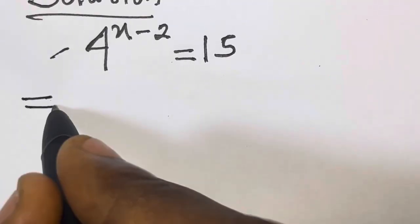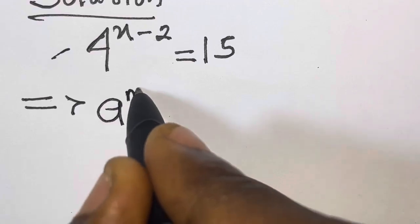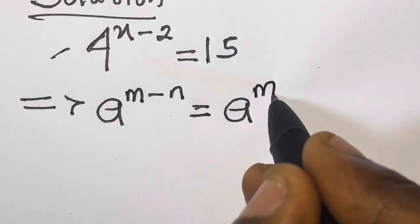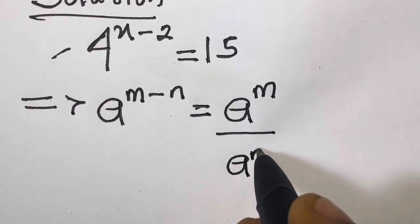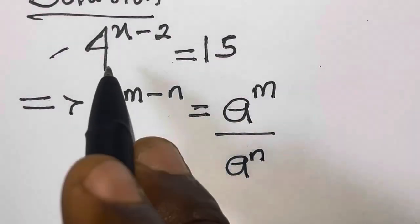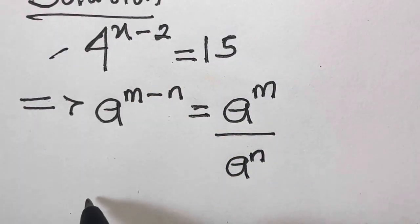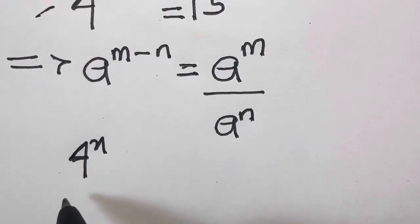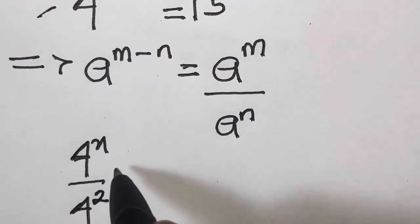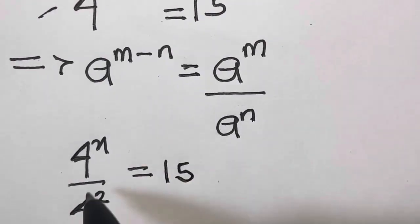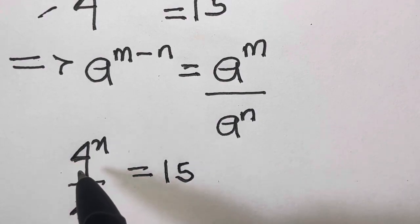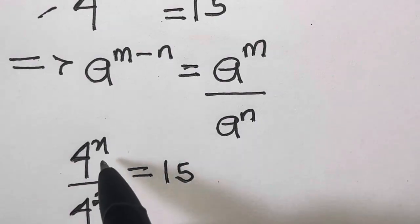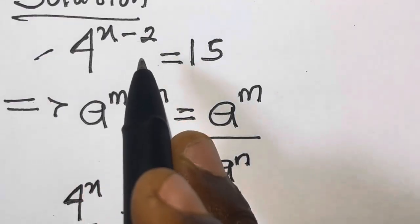From here, let's recall that if we have a raised to the power m minus n, this equals a raised to the power m divided by a raised to the power n. So applying this, we have 4 raised to the power x divided by 4 raised to the power 2 equals 15. We know this division law from the law of indices: when numbers with the same base are divided, the power of the divisor is subtracted from the power of the dividend. That's why we have 4 raised to the power x minus 2.